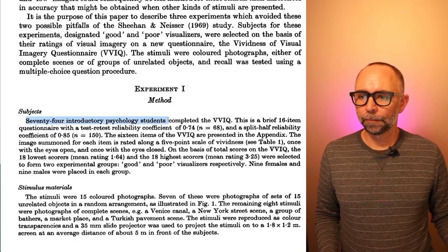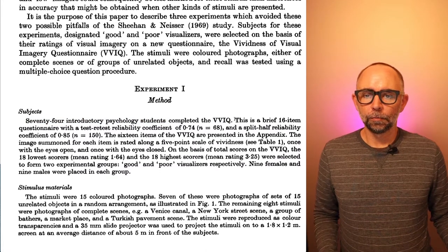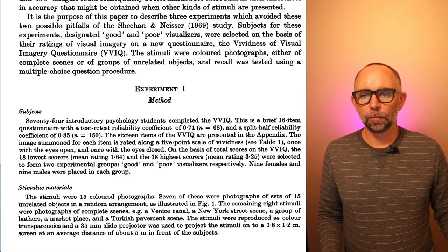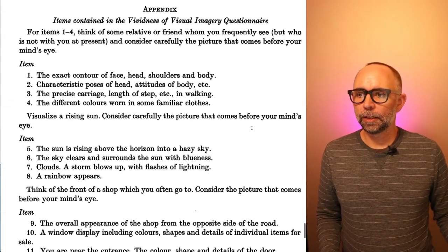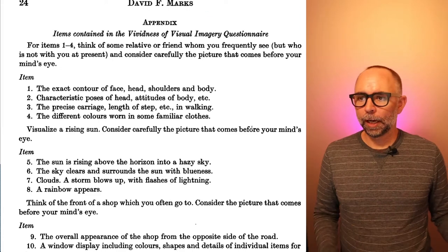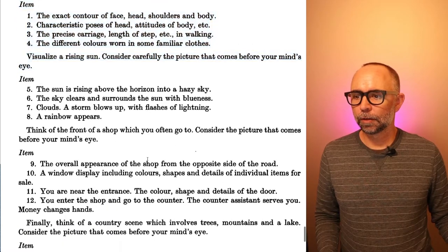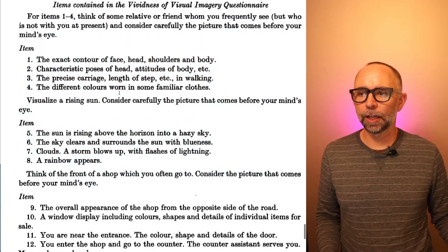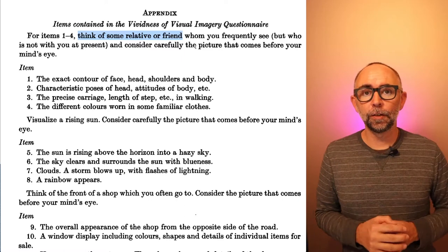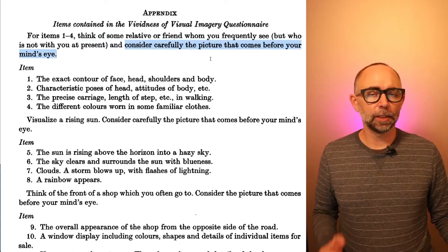In experiment one, 74 people in an introductory psych class completed the VVIQ. It's 16 questions. If we go to the end of the manuscript, we can see a printout of the questionnaire. There are four different scenarios, and each scenario has four questions. The first scenario is to think of a relative or friend, bring them to your mind's eye, and carefully consider the picture that comes into your mental image.